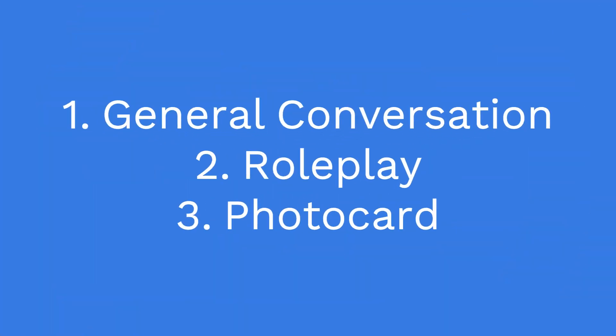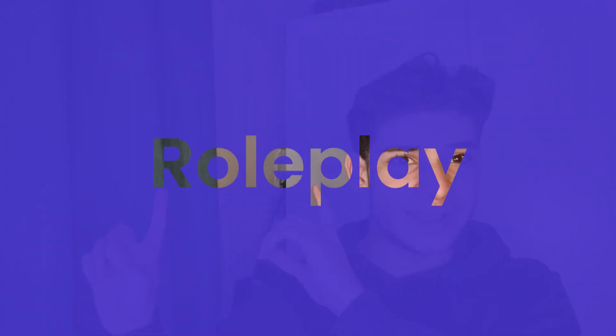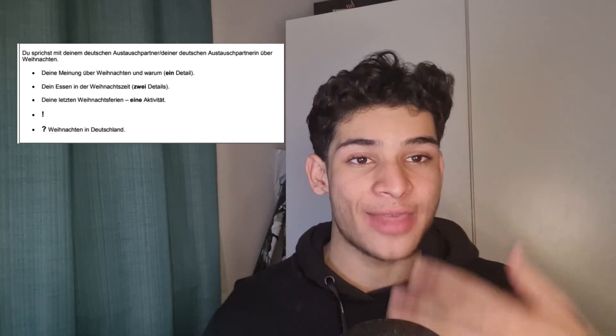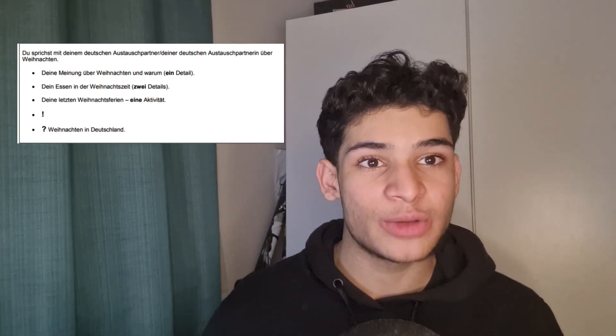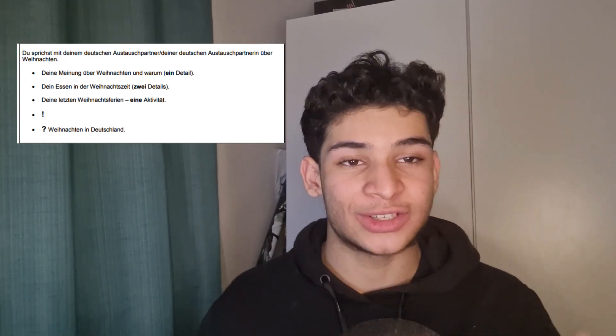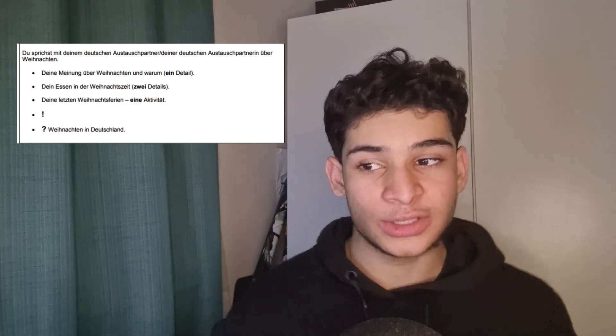There are three separate parts with AQA anyway: general conversation, roleplay, and photocard. General conversation takes up the bulk of it, and roleplay and photocard are a little bit smaller. So I'm going to break these down into quite simple things. To begin with, we're going to look at roleplay. I've put up an example of a roleplay. With a roleplay, you get a piece of paper and there are five bullet points.